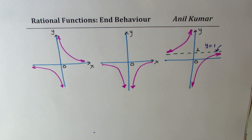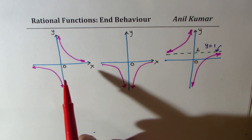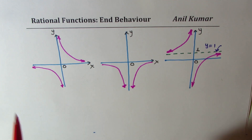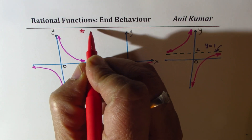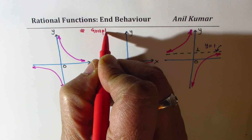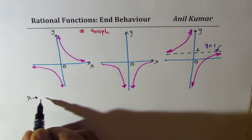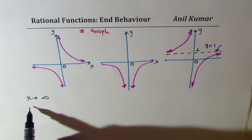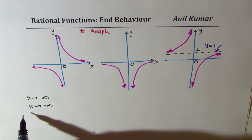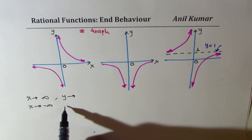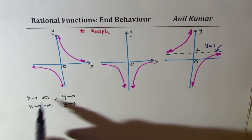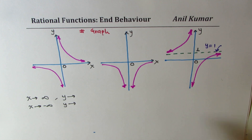Welcome to this video on rational functions. We'll discuss end behavior from graphs and from equations. End behavior means what happens to the Y value as X approaches positive infinity and as X approaches negative infinity.